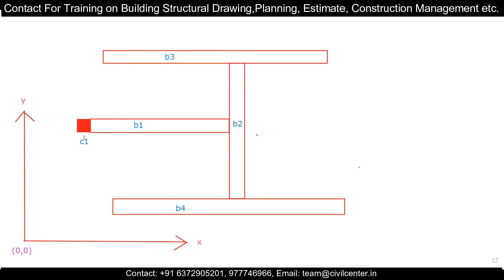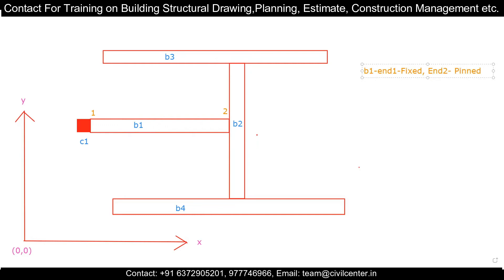For beam B1, when seen from the top view — left to right is positive — so the left side is end one and the right side is end two. In B1, end one is fixed because it has a column connection, and end two is pinned because there is no column on that side.